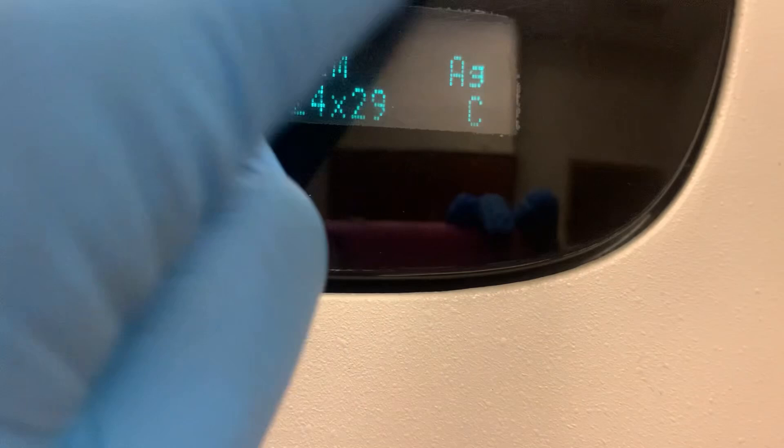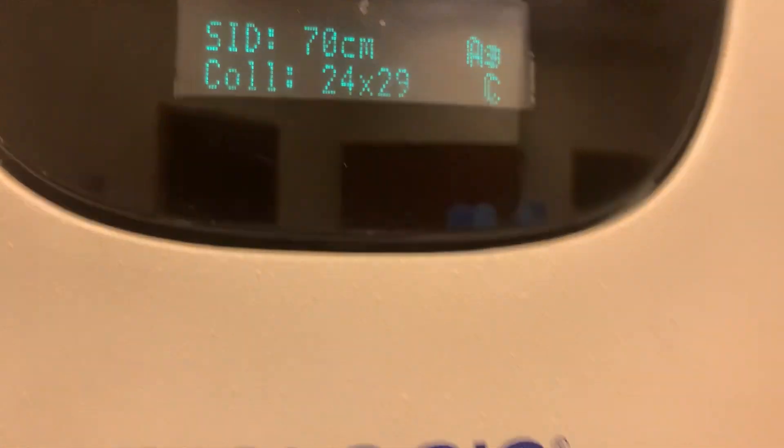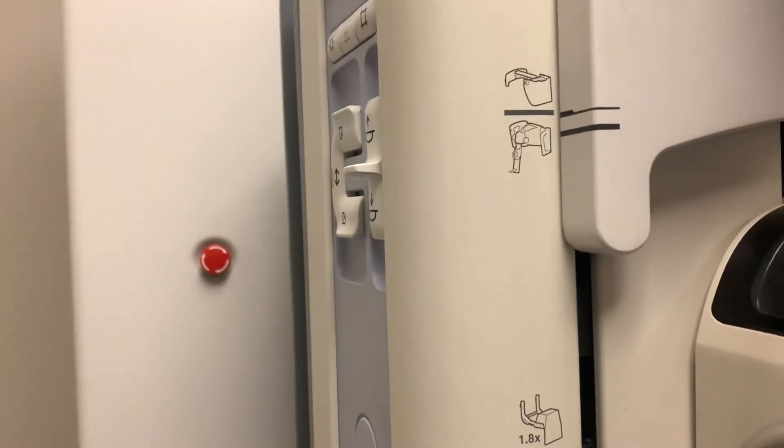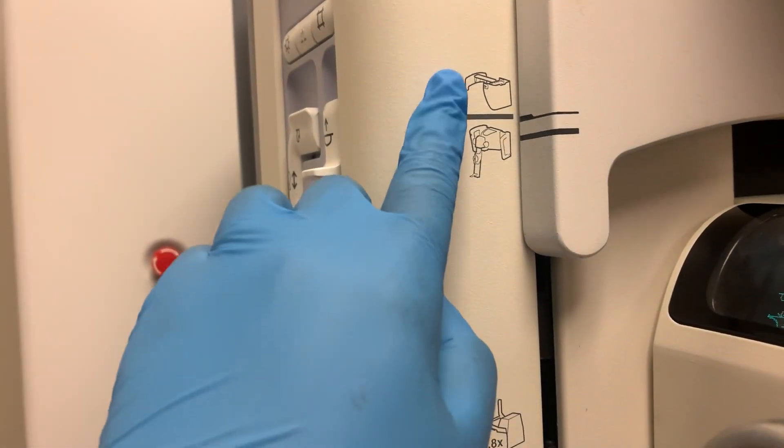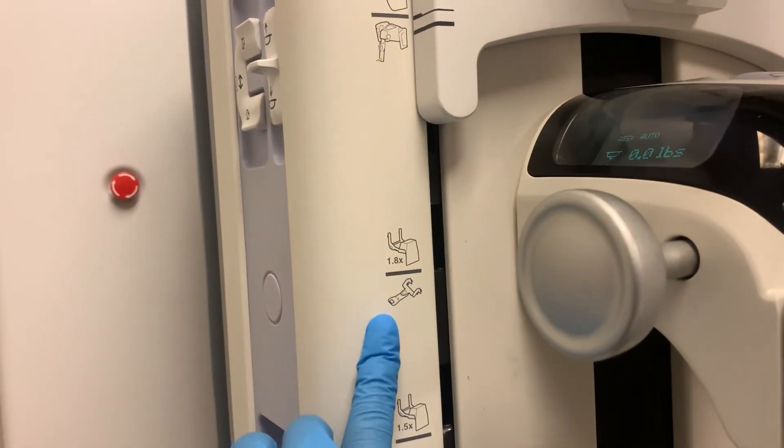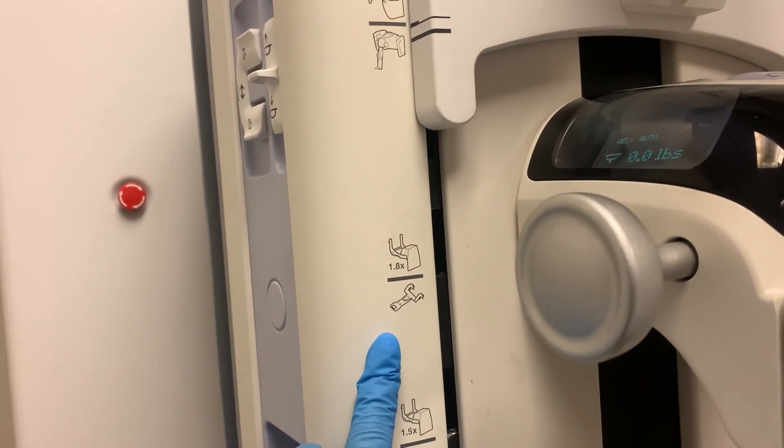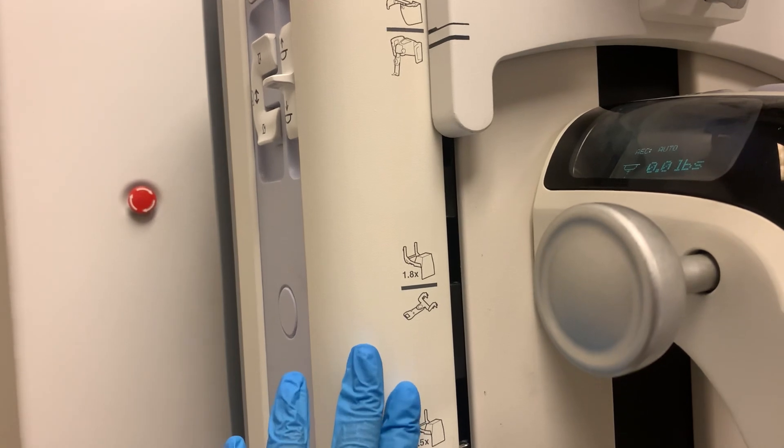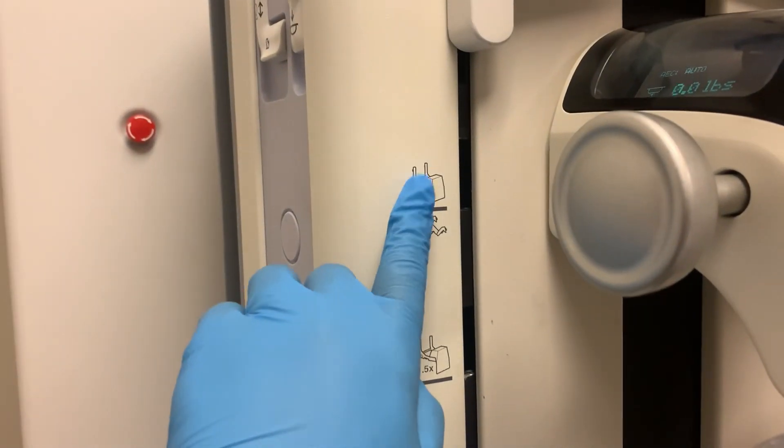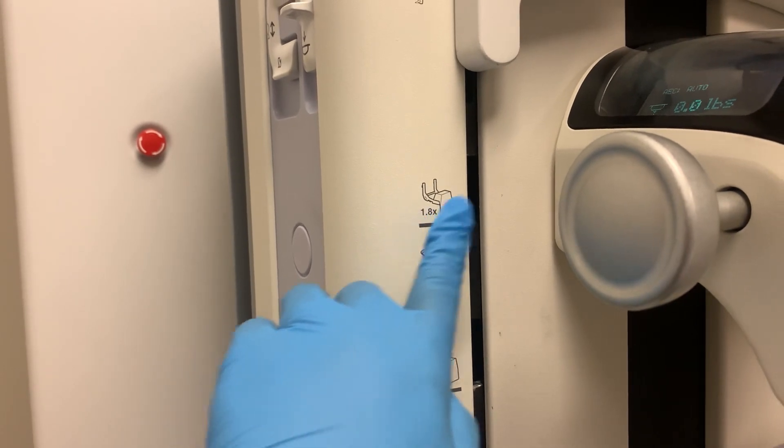This one is at 70 centimeters. And then this filter, AG, is silver. And then it also shows what compression paddle you have. Right here, 24 by 29. And then you also have little pictures right here. It shows that the face shield goes right here. If a patient has to come back for a diagnostic mammogram and have to use the calcification paddle, then the calcification magnification stand will fit right here.